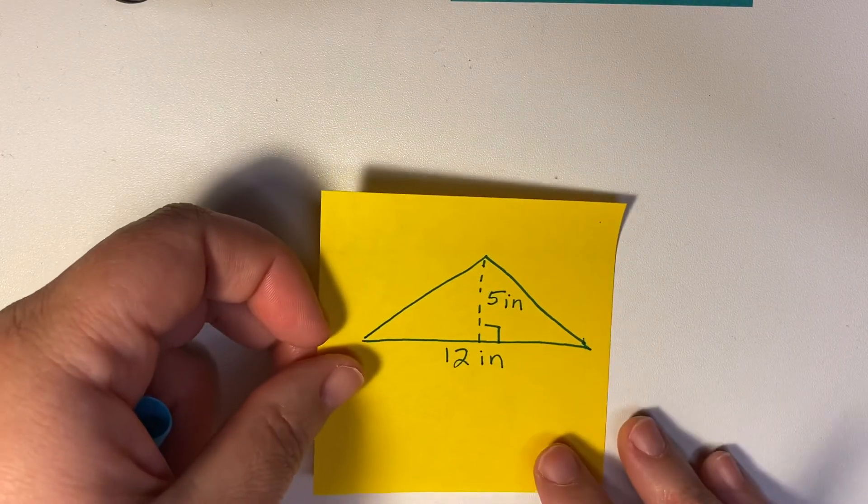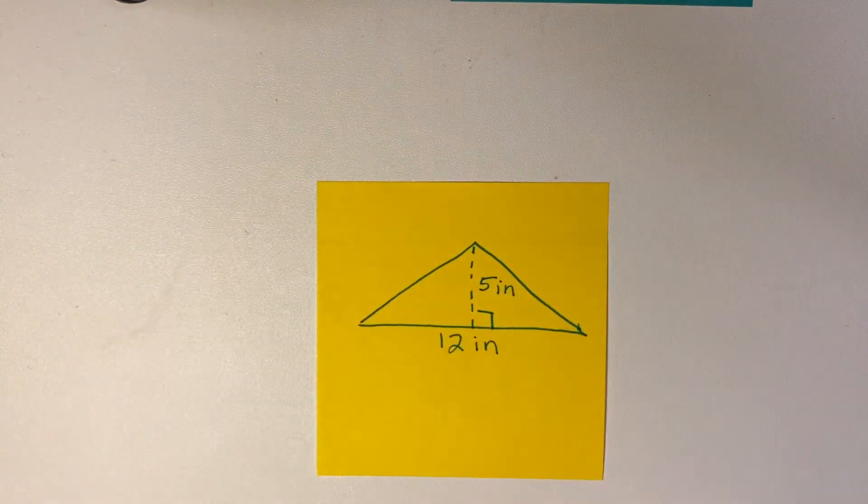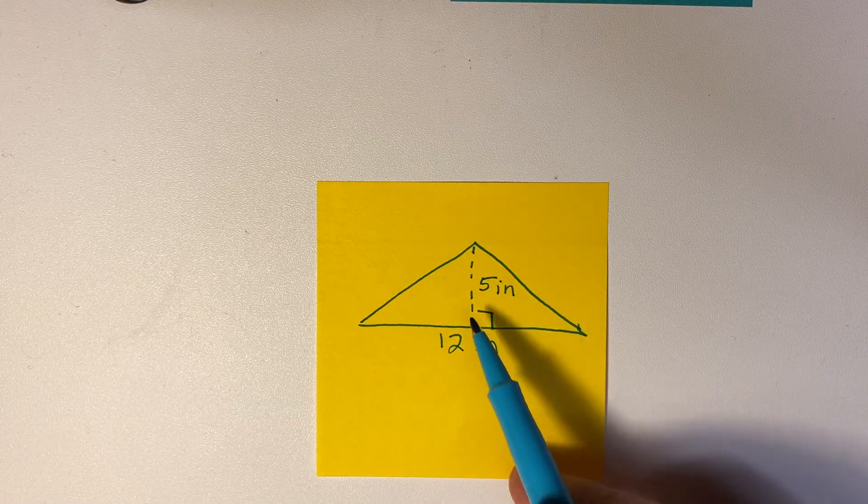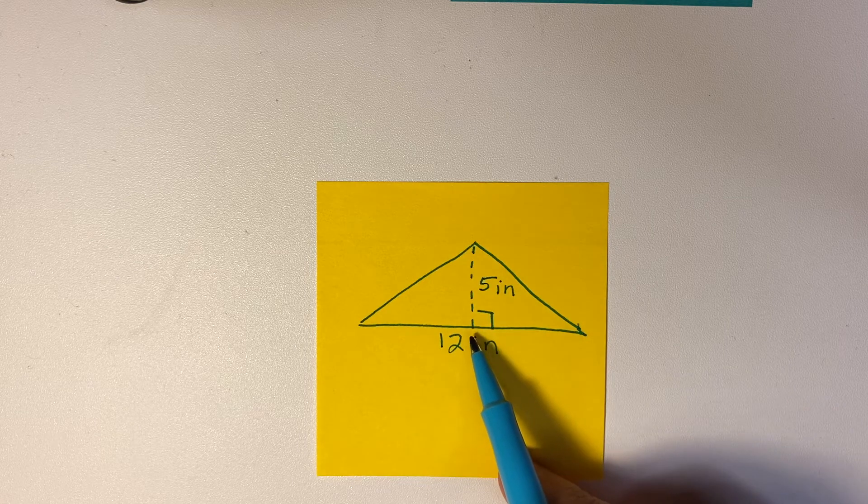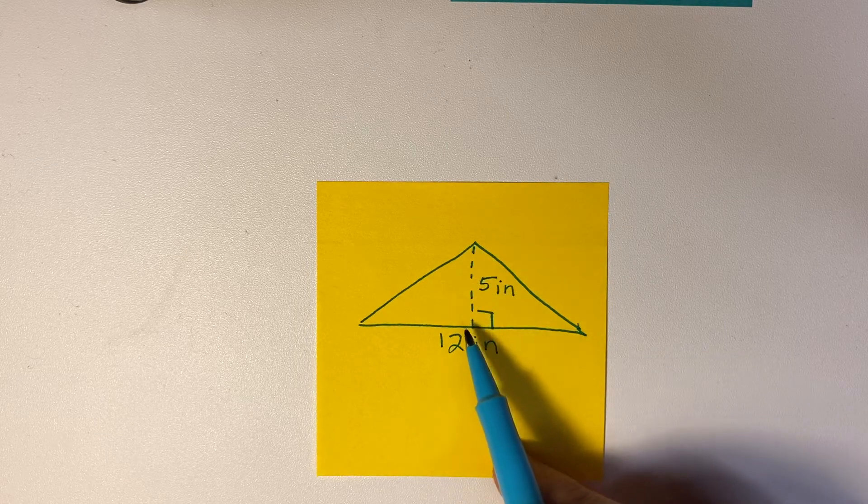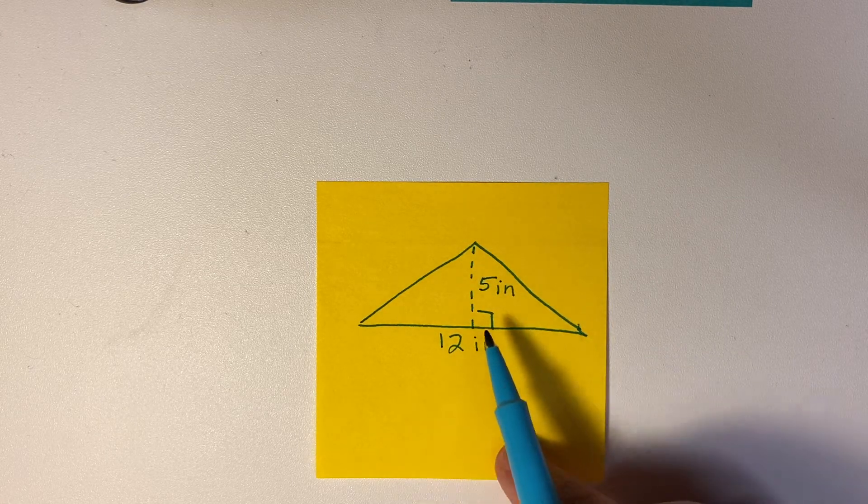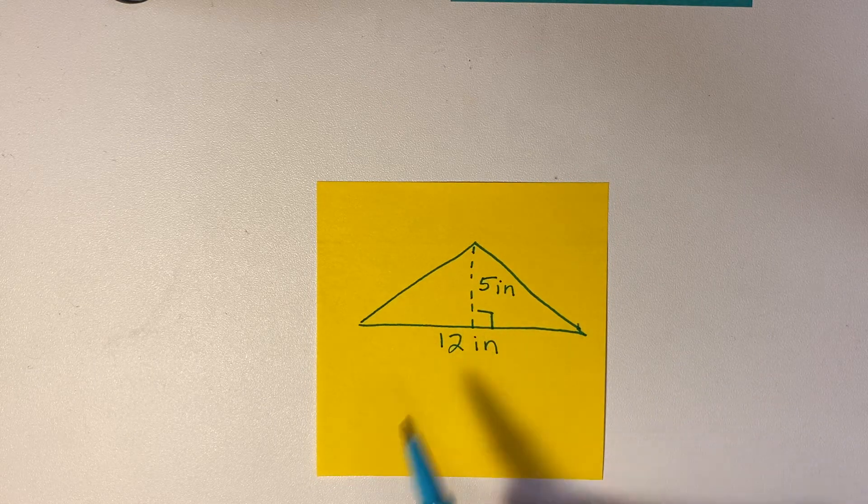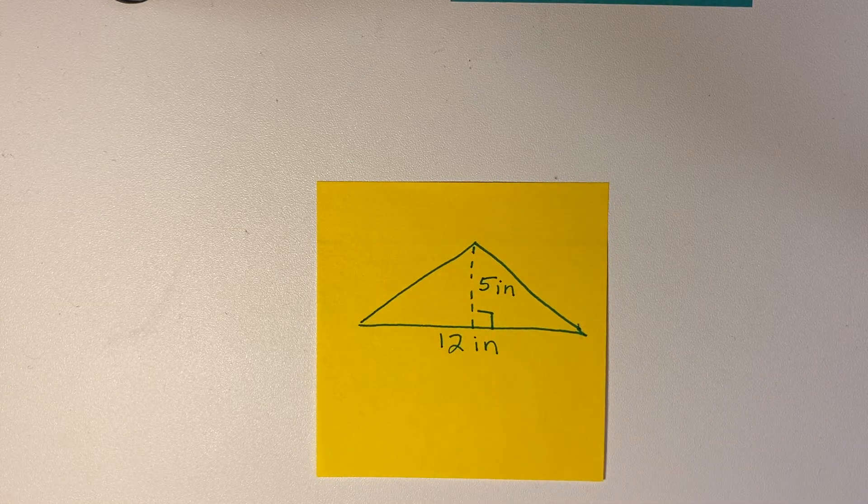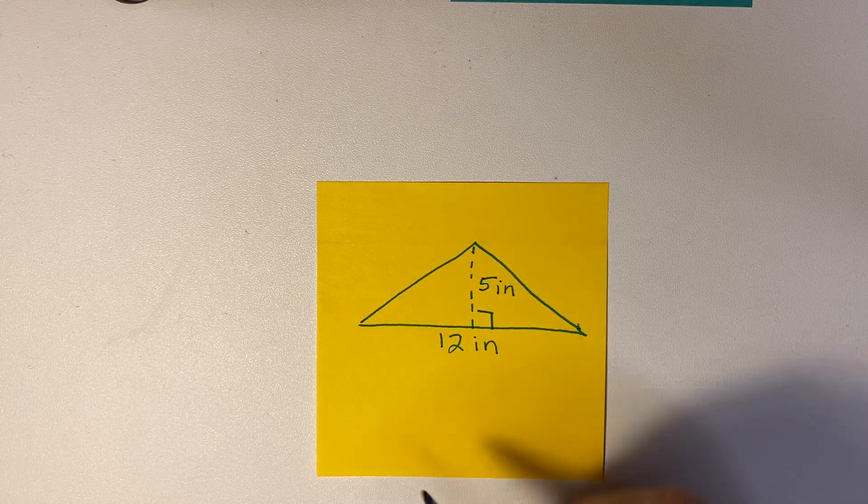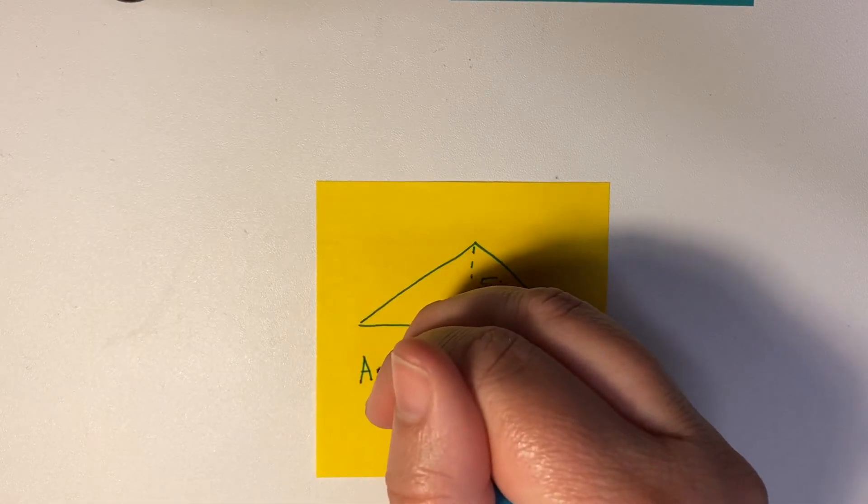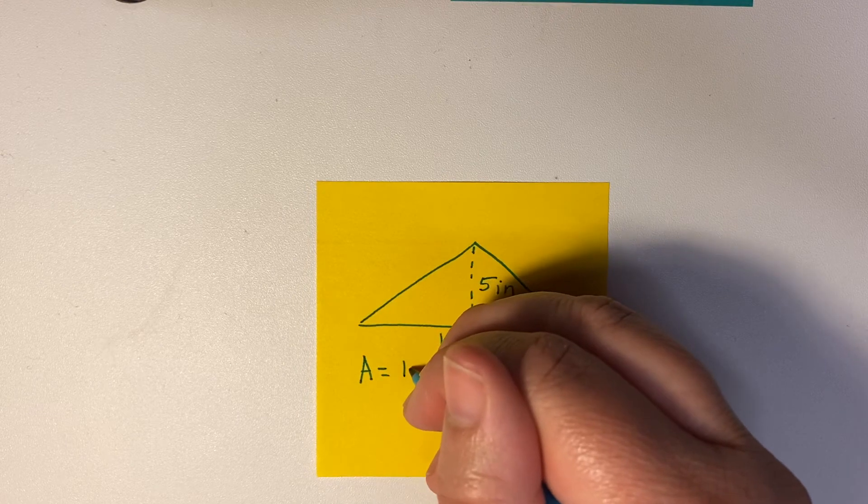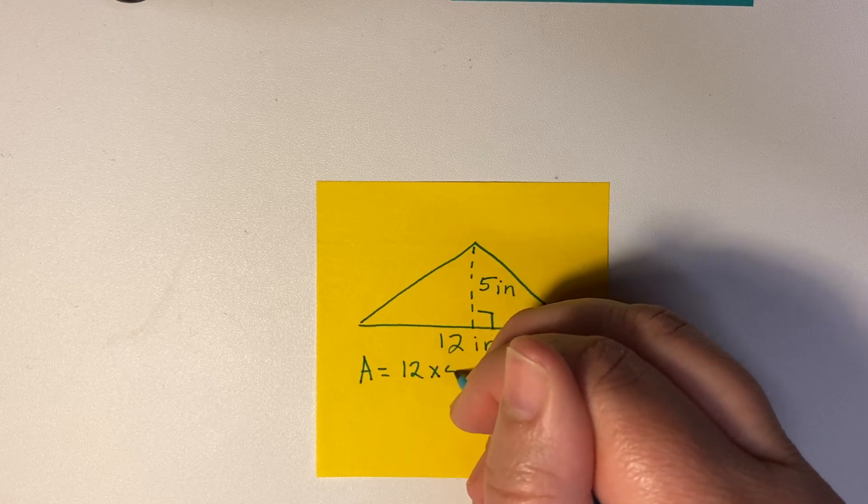Okay, let's do one more example. Sometimes it won't be a right triangle, so we're not looking at one of the sides. These dotted lines tell us that this is not an actual side of the triangle, it is just showing us the height and making this right triangle in the middle. So we're going to still do the base times the height, so we're going to do 12 times 5 divided by 2.